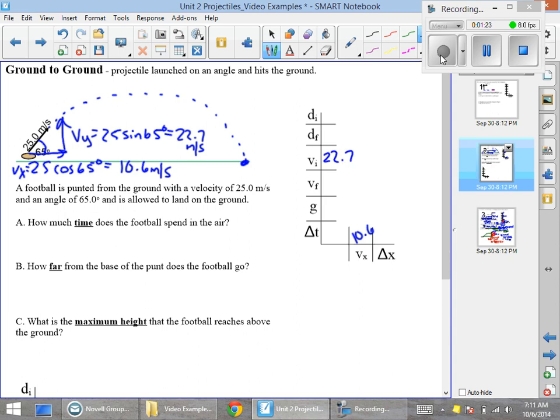Okay, plug our numbers in our chart. Now if we want to know how much time the football spends in the air, we have to realize that the football starts on the ground, so our di is 0. It ends on the ground, so our df is 0.